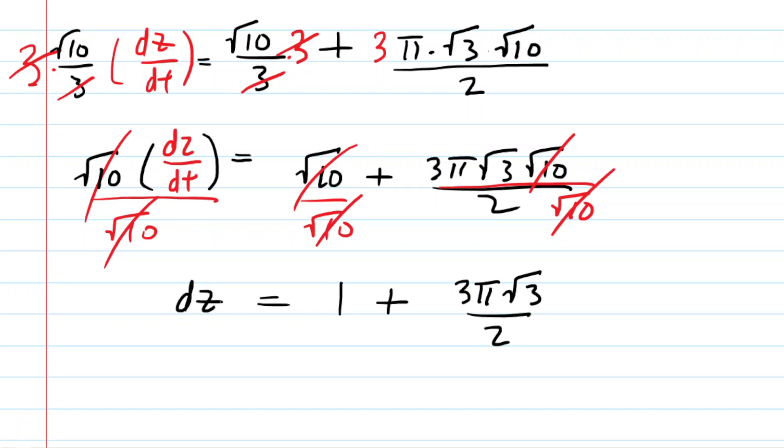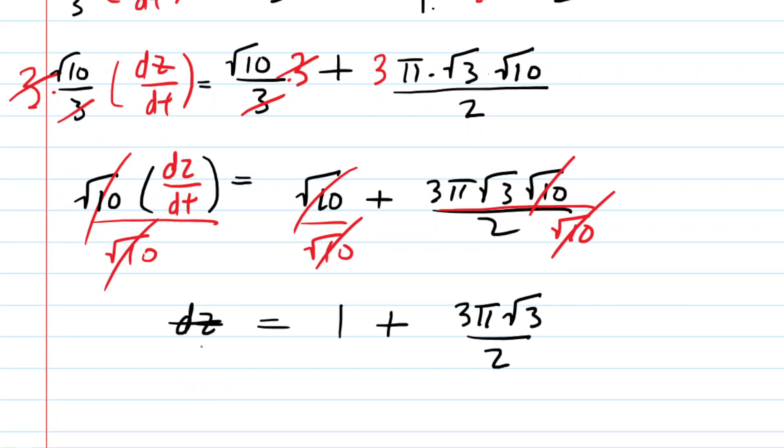And so this will be the correct answer to the problem. We can attach a unit to our answer. We know that the rate of change in x was measured in centimeters per second, so the rate of change in z would also be centimeters per second. So this would be the final answer to the question.